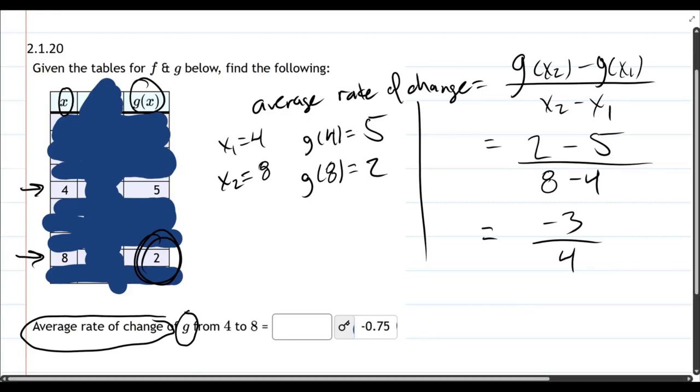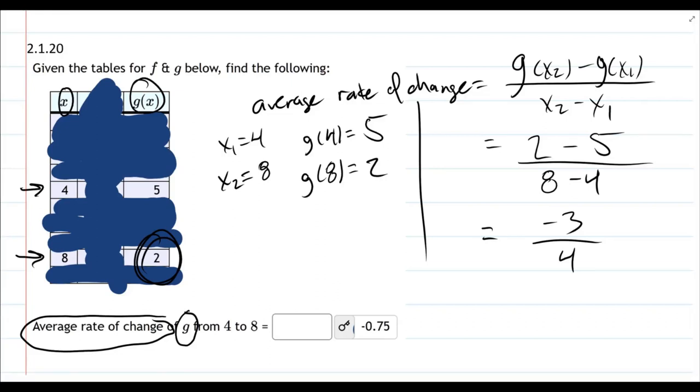Now let's go ahead and uncover the answer. That negative 0.75 is the decimal for negative 3/4.